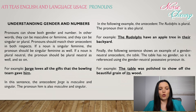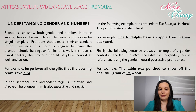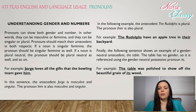For example: George loves all the gifts that the bowling team gave him. In this sentence, the antecedent George is masculine and singular; the pronoun 'him' is also masculine and singular. In the following example, the antecedent 'the Rudolphs' is plural; the pronoun 'their' is also plural: The Rudolphs have their apple tree in their backyard. Lastly, the table has no gender, so it is referred to using the gender-neutral possessive pronoun 'its': The table was polished to show off the beautiful grain of its wood.